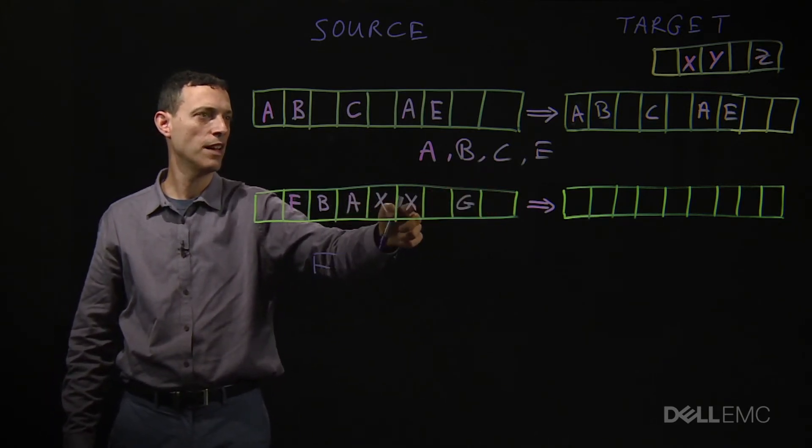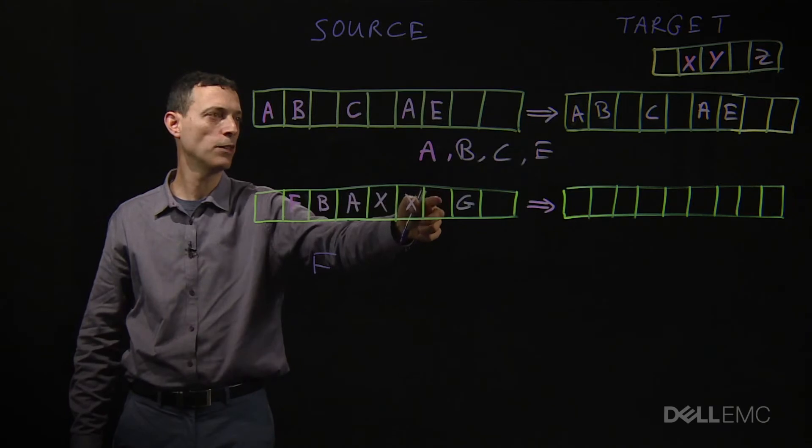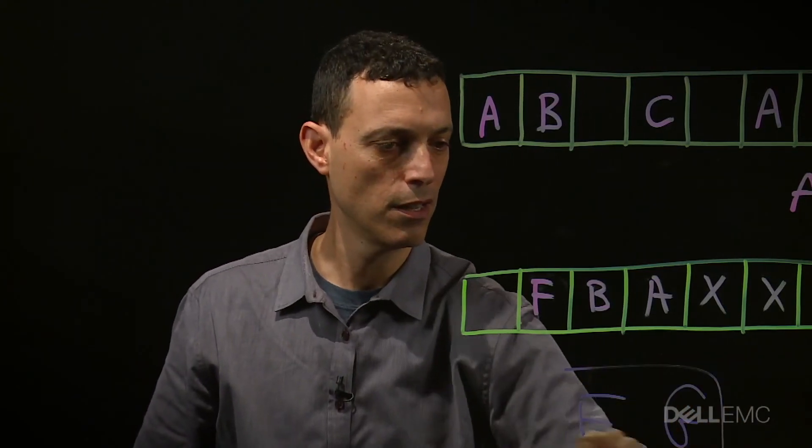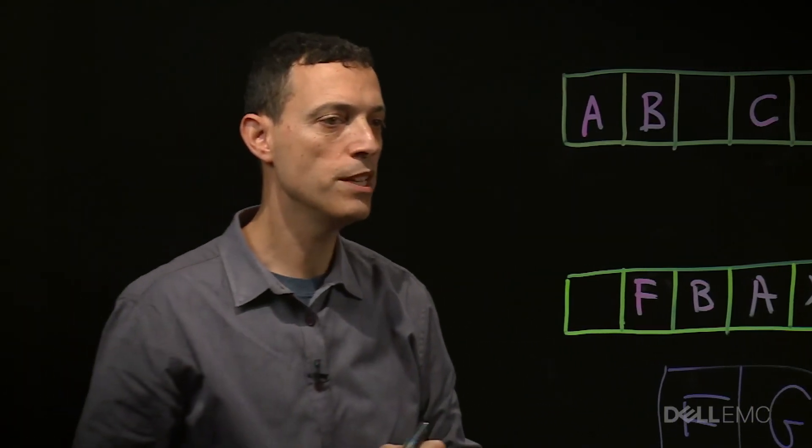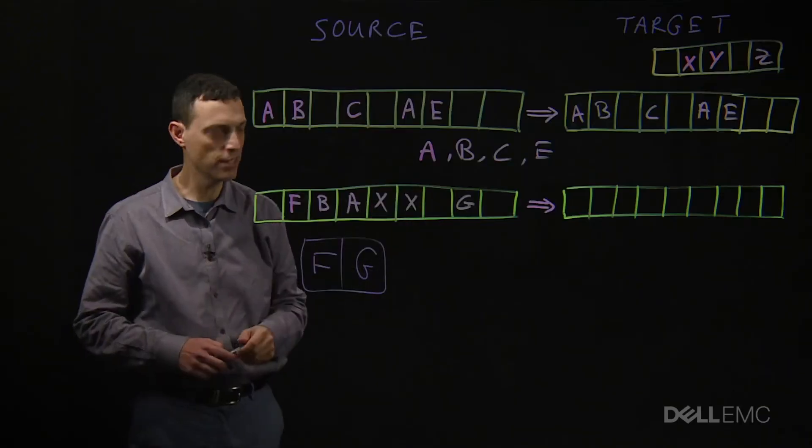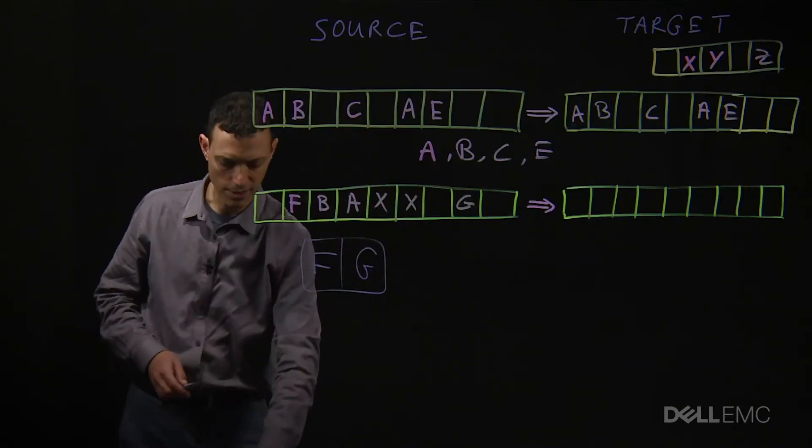X, X already on the target cluster. Nothing changed here. G is new. So two blocks need to be transmitted in order to create the updated image on the target.